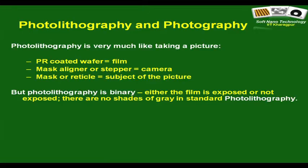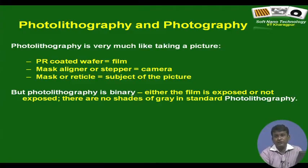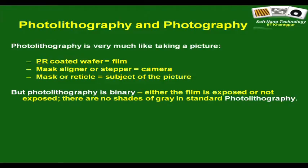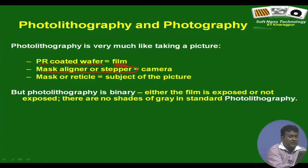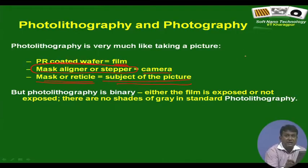Photolithography is very similar to classical photography — which is now almost dead thanks to the advent of the digital camera. The photo resist coated wafer is analogous to the film, the mask aligner or stepper is essentially the camera, and the mask or reticle is essentially the subject of the picture. In a classical film-based camera you create an image on the film, and here you create an image of your mask on the photo resist layer.